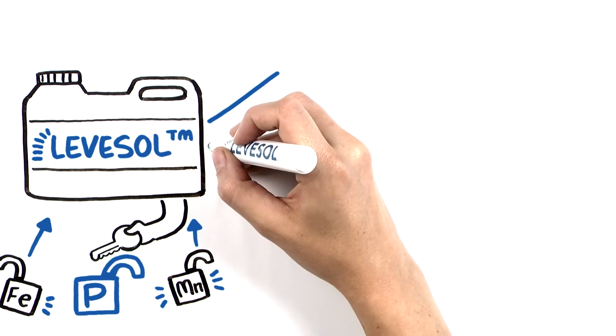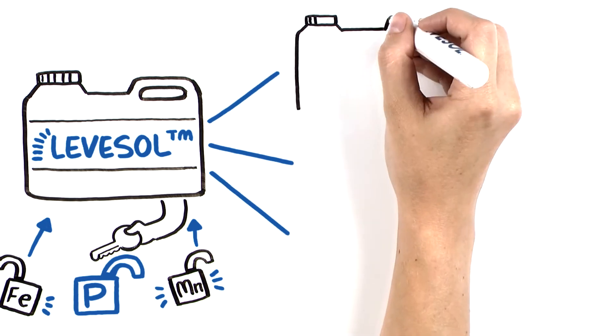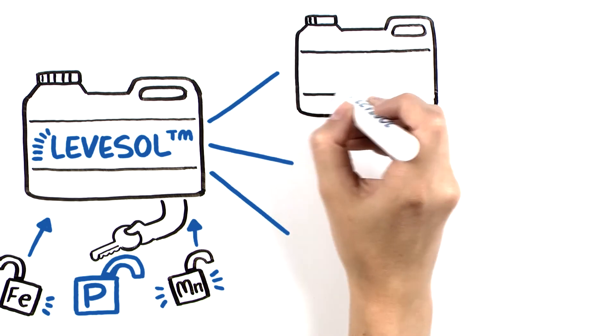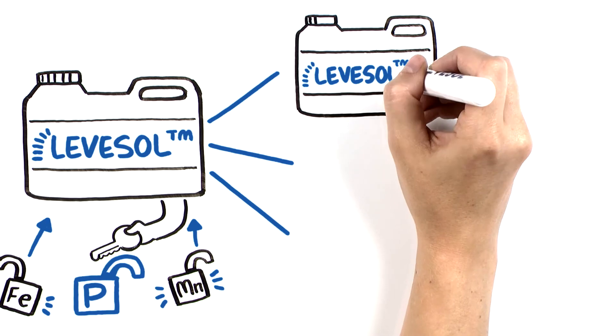The Levisol technology is available in multiple options for a range of utility. Levisol is the first of its kind chelate that can be added directly to liquid starter fertilizer, making the nutrients in your starter and soil more available to the plant.